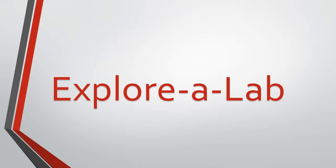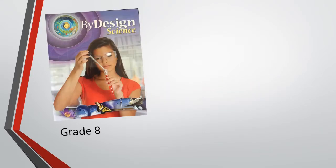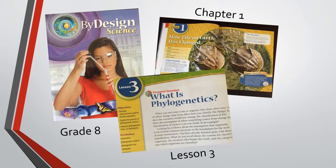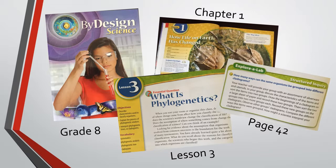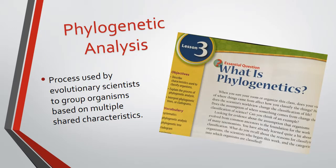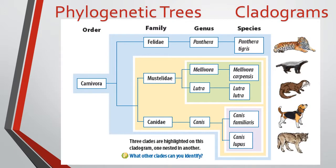This presentation explains the Explora Lab in the 8th Grade By Design Science textbook, Chapter 1, Lesson 3, on page 42. This activity is in the lesson on phylogenetic analysis, which is a process used by evolutionary scientists to group organisms based on multiple shared characteristics. The results of their analysis are displayed in diagrams called phylogenetic trees or cladograms, like the one shown on page 39 or this one, which is from page 42.